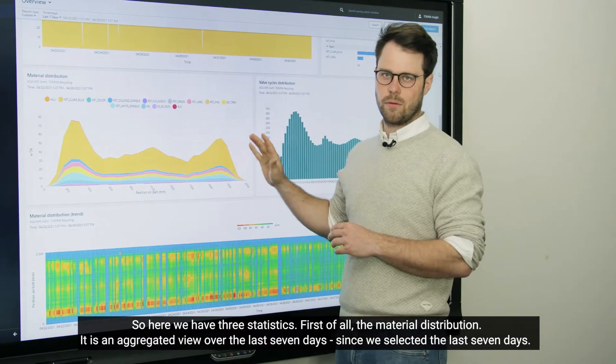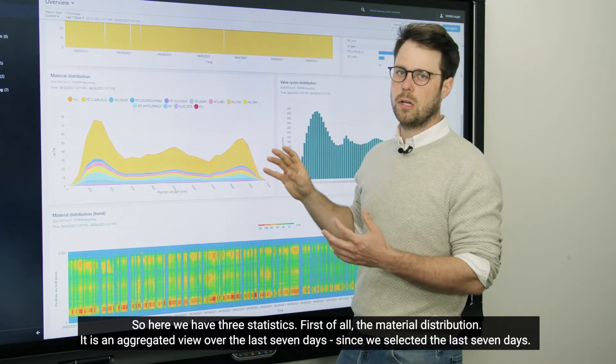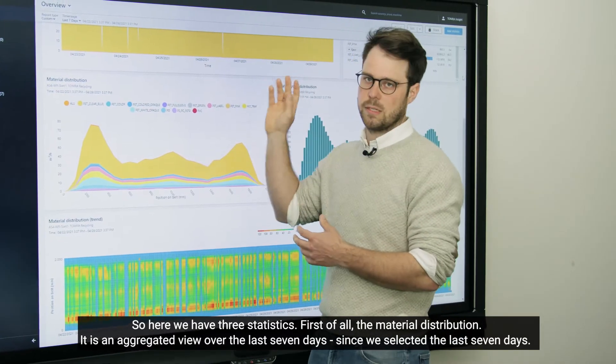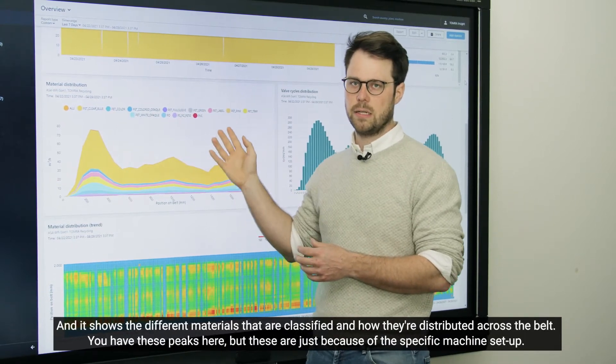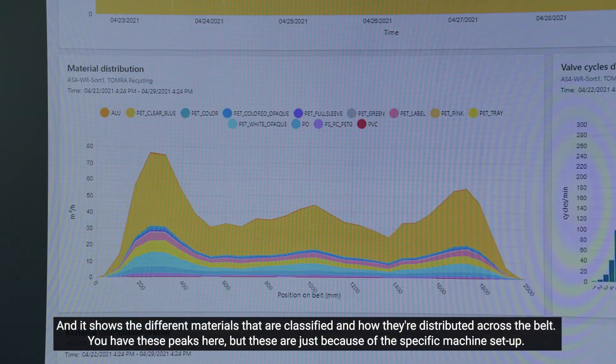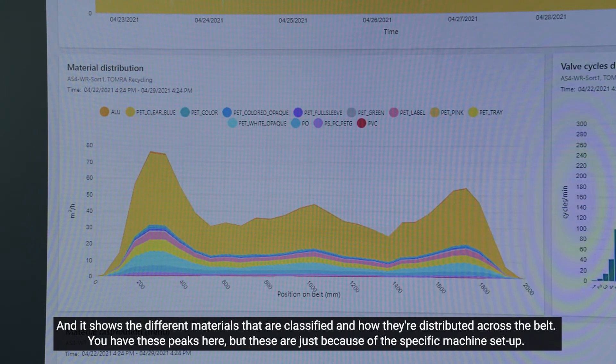So here we have three statistics. First of all, the material distribution. It is an aggregated view over the last seven days, since we selected last seven days. And it shows the different materials that are classified and how they're distributed across the belt. We have these peaks here, but these are just because of the specific machine setup.